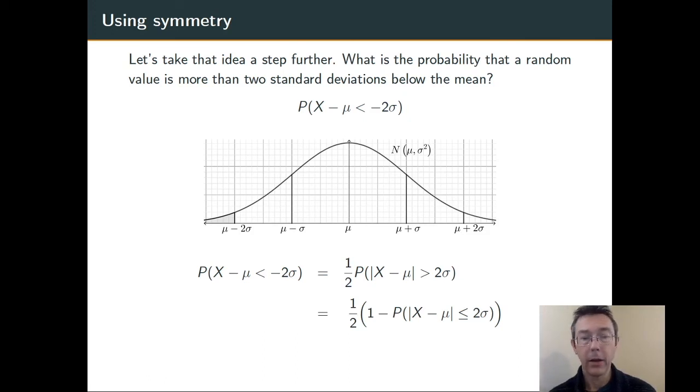That doubled area now is going to be the complement of the region within two standard deviations of the mean. That region within two standard deviations of the mean we know should have area 0.95 by the empirical rule. So, overall, I'm doing one half times (1 - 0.95), or 0.025. There's a two and a half percent chance of randomly getting a value at least two standard deviations below the mean.